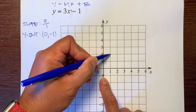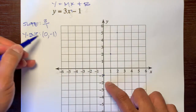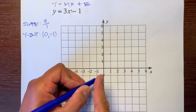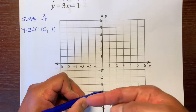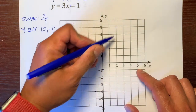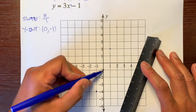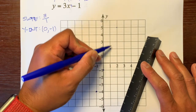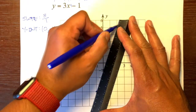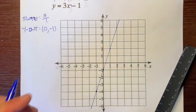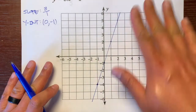We connect all the points: start at (0, negative 1), up 3, over 1, up 3, run 1 — and we have a straight line. Our starting point is at (0, negative 1) and our slope is up 3 over 1.